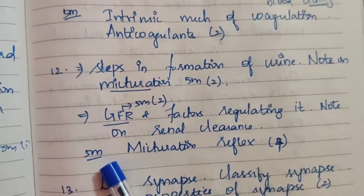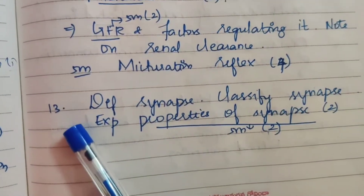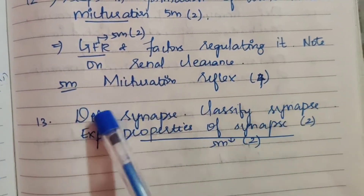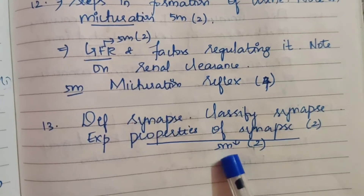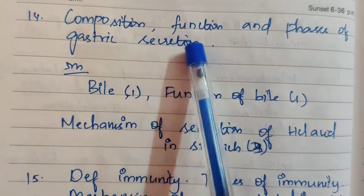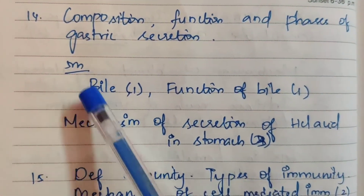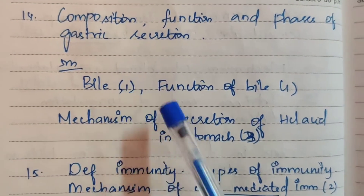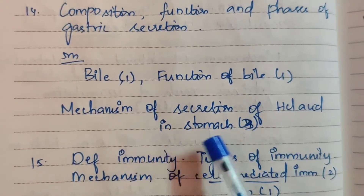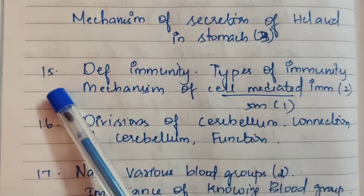Twelfth question covers both 15-mark and 5-mark components. Micturition reflex has appeared in the question paper four times — that topic appears three times as well. Gastric secretion is the next 15-mark topic.